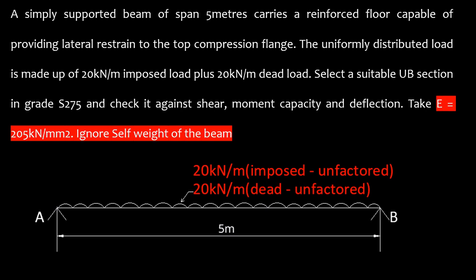The question reads: a simply supported beam of span five meters carries a reinforced concrete floor capable of providing lateral restraint to the top compression flange. The uniformly distributed load is made up of 20kN/m imposed load or live load plus 20kN/m dead load. Select a suitable UB section in grade S275 and check it against shear, moment capacity and deflection.